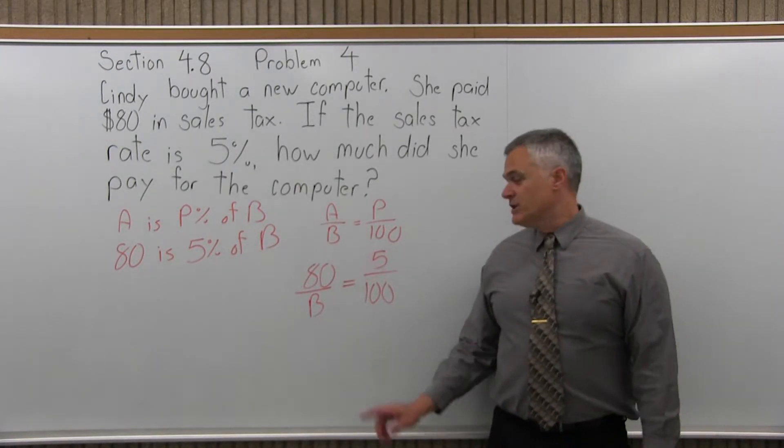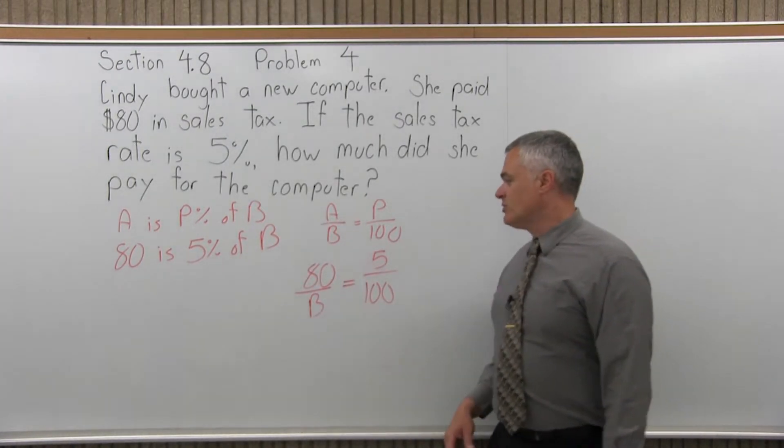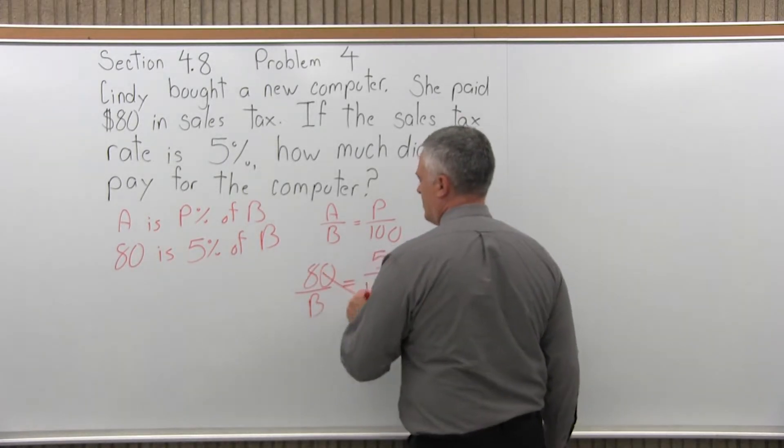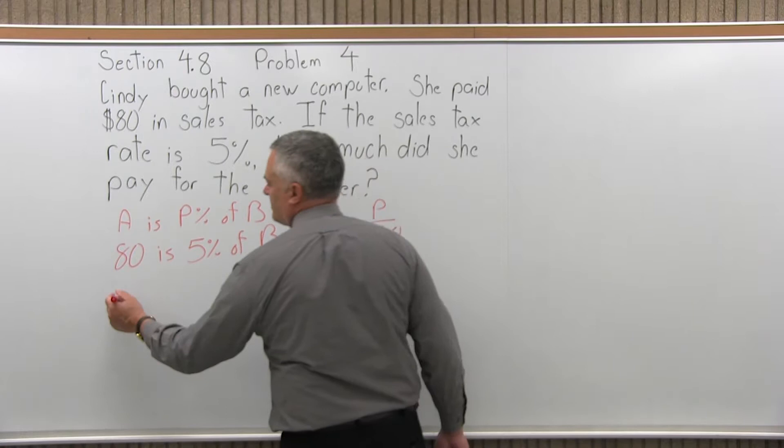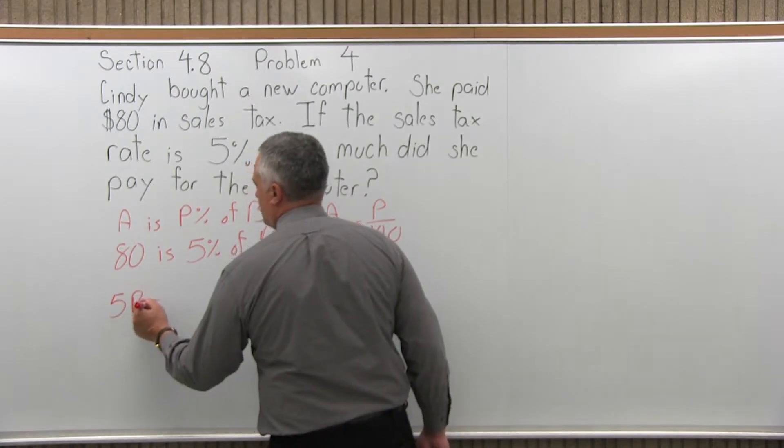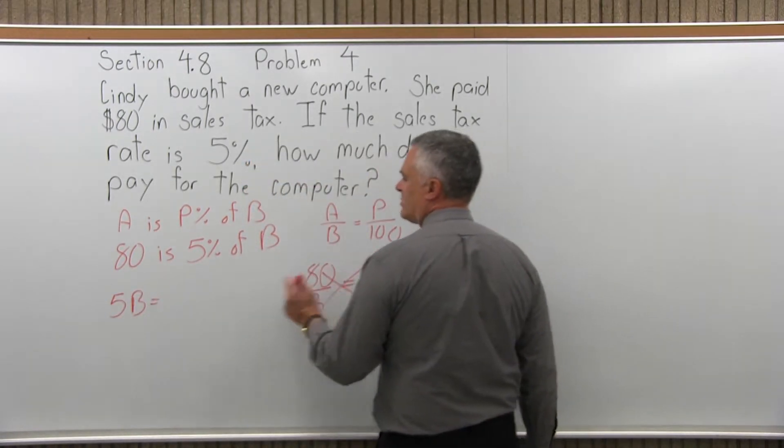So now I have an equation, one unknown value, so I can solve for the unknown. And we'll do that by cross multiplying. So 5 times B will be 5B equals 80 times 100.